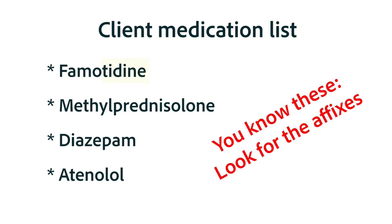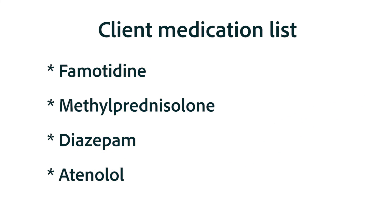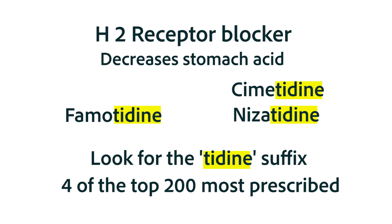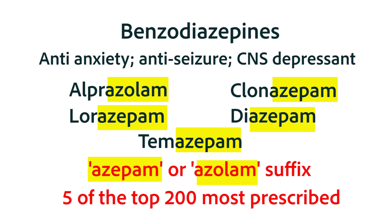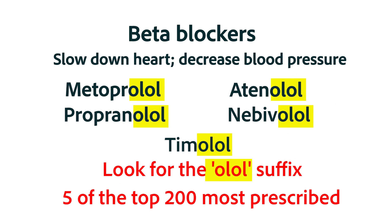Let's take a quick quiz. You're looking at a client's medications and see that he's on famotidine, methylprednisolone, diazepam, and atenolol. Identify the drug class each medication belongs to. Famotidine is the histamine 2 antagonist that decreases stomach acidity — the drug we'll focus on in this chapter. Methylprednisolone is a corticosteroid that decreases the immune system response. Diazepam, also known as Valium, is a benzodiazepine prescribed for seizures and anxiety. And atenolol is a beta blocker that decreases hypertension — remember the O-L-O-L suffix.